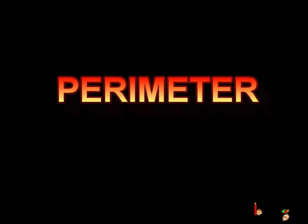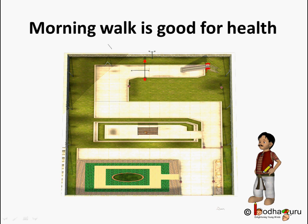Let us understand it first. This is Manat Ram. His doctor asked him to at least walk one kilometer every day because morning walk is good for health. So instead of walking on the sides of the road, he decided to walk along the garden to get fresh air. Now can you tell how much distance he walked when he took one round of this garden?